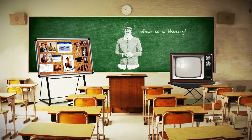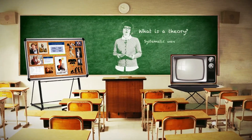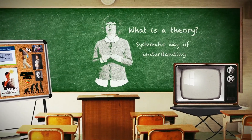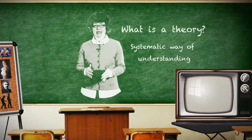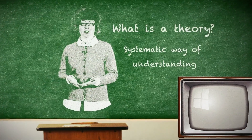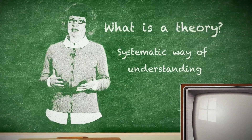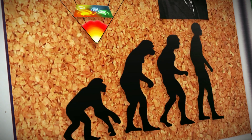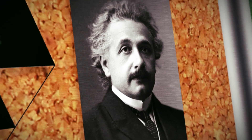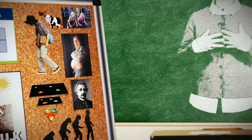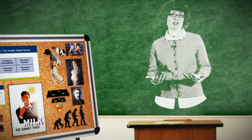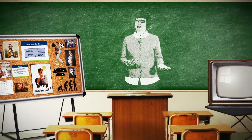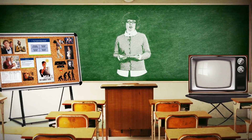First, what is a theory? A theory is a systematic way of understanding things. Theories synthesize bodies of evidence into key principles that explain and predict various phenomena. Think of the theories you might have heard of already — things like the Big Bang Theory, the theory of evolution, the theory of relativity. All these theories synthesize evidence into explanations for observations and enable us to make informed predictions regarding expected outcomes given a particular set of circumstances.